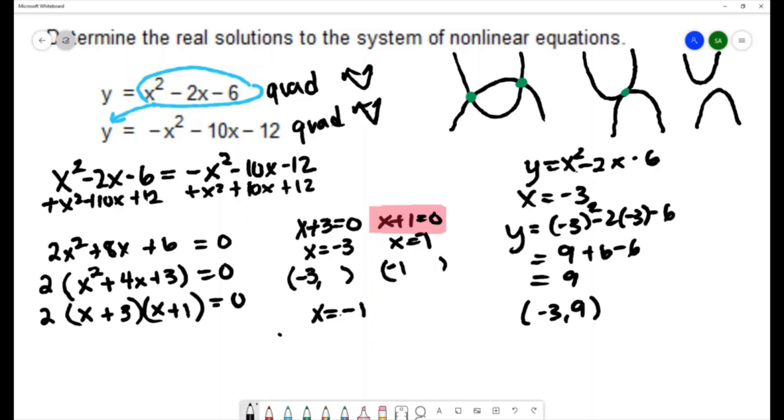So x equals negative 1. Then y is equal to negative 1 squared minus 2 times negative 1 minus 6. That's 1 plus 2 minus 6. 3 minus 6 is negative 3. So the other solution would be negative 1, negative 3.